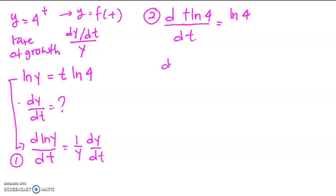You equate part 1 and part 2. You have 1 over y dy dt is equal to ln 4. Then you have dy dt is equal to y times ln 4.